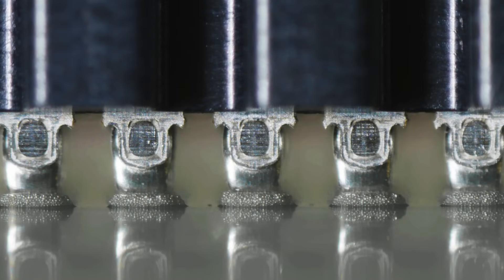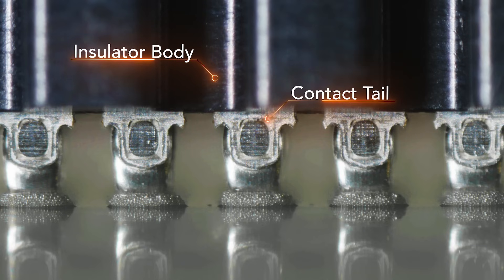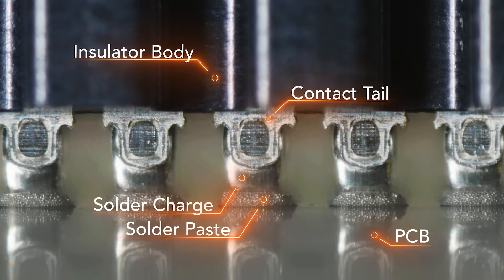In this video of the reflow process, we see the following components: insulator body, contact tail, solder charge, solder paste, and the printed circuit board or PCB.